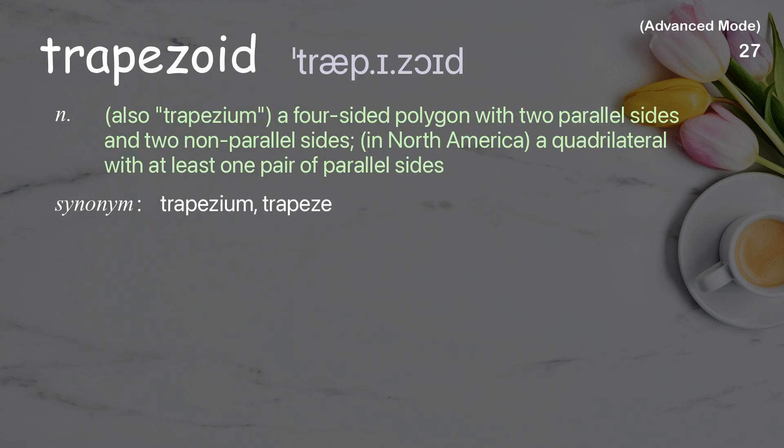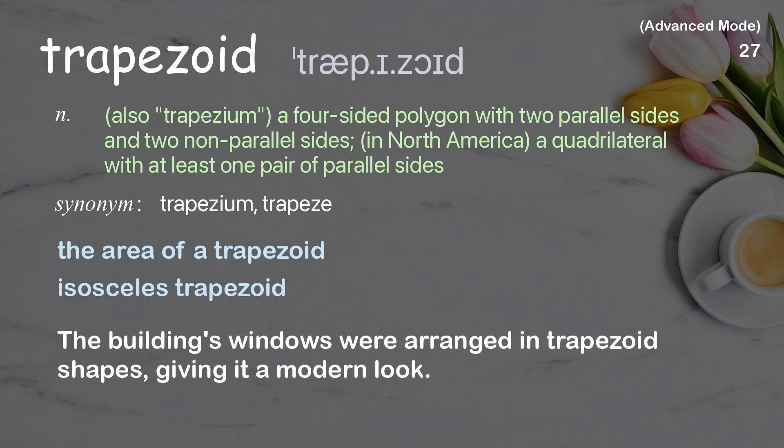Trapezoid (also trapezium): a four-sided polygon with two parallel sides and two non-parallel sides. In North America, a quadrilateral with at least one pair of parallel sides. Examples: the area of a trapezoid, isosceles trapezoid. The building's windows were arranged in trapezoid shapes, giving it a modern look.